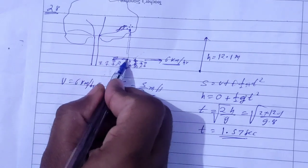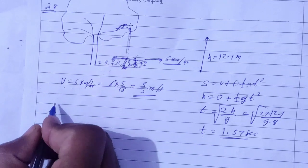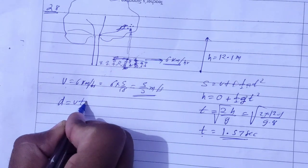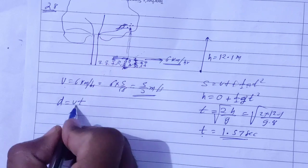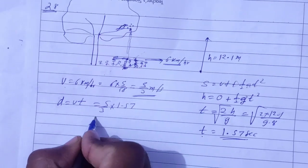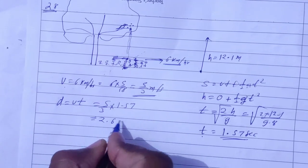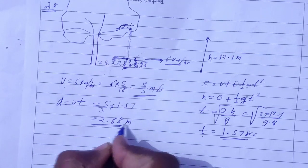To find which cadet will receive it, distance is equal to speed into time: 5 by 3 into 1.57, which gives the answer 2.68 meters.